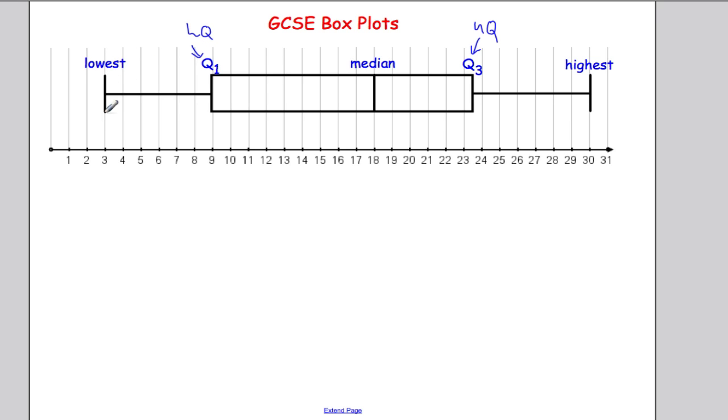This was the lowest value in the data set, this was the highest value in the data set. So it's a nice way of summarizing a data set, giving us some key features. So I can see the median of this data set is 18. The upper quartile looks to me to be around 23.5, the lower quartile is 9, the lowest value would be 3, and the highest value would be 30. So that's what GCSE box plots required us to know.